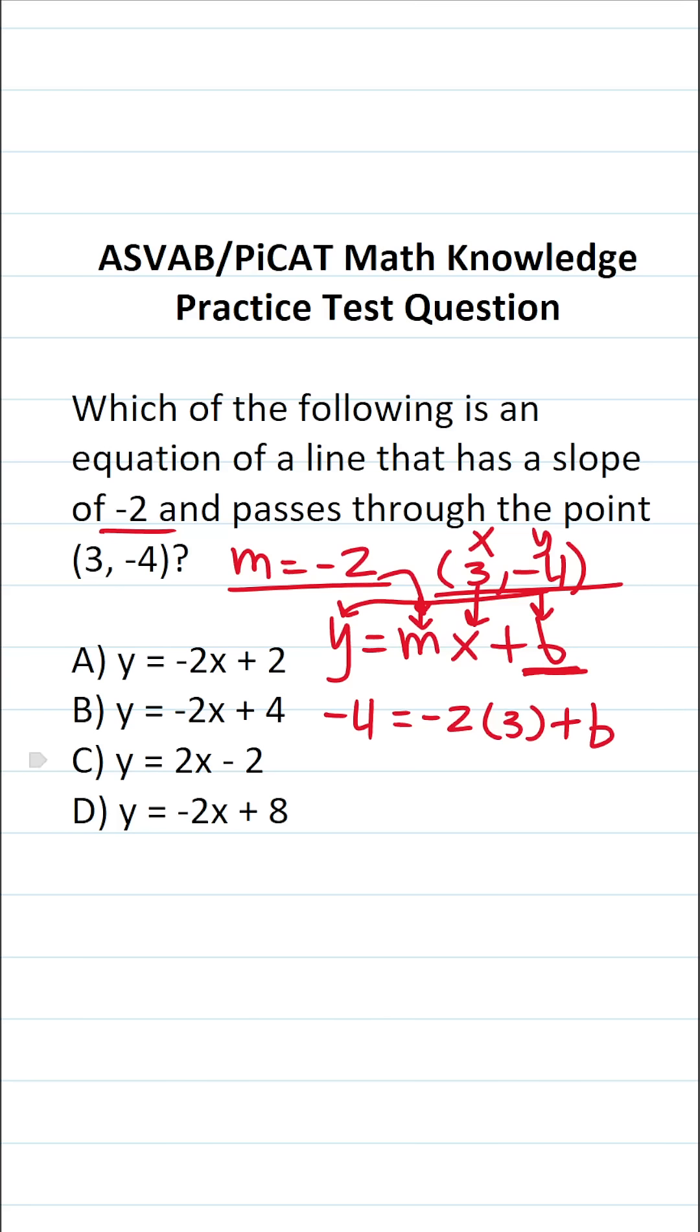Let's go ahead and work this out. This is negative 4 equals negative 2 times 3 is negative 6 plus b. We want to solve for b, so the next thing we're going to do is add 6 to both sides of the equation. This crosses out, leaving us with just b on this side. Negative 4 plus 6 is going to be 2.